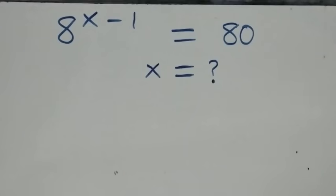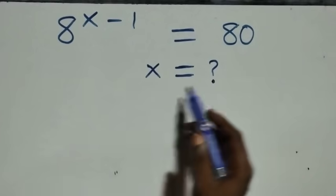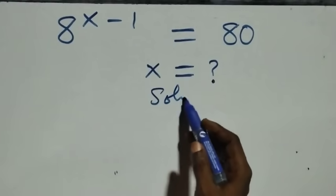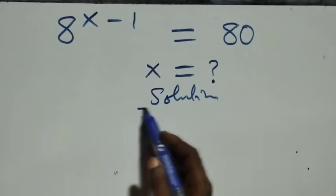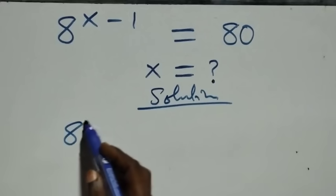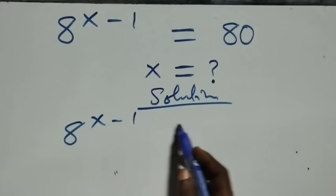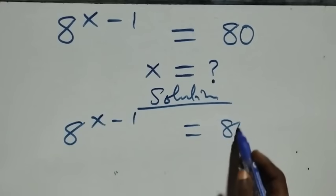Welcome. How to solve this nice exponential equation. What we have here is a raised to power x minus 1, equals to 80.